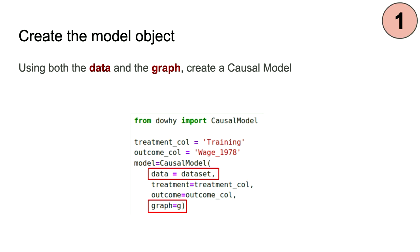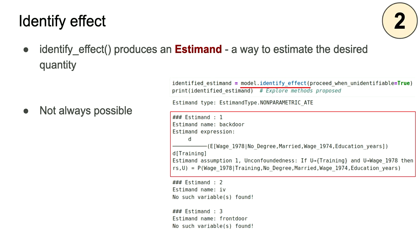That was the first step and really the bulk of the work you have to do as a user of the DoWhy library. Once you've created that graph as a string and you've got your data as a pandas DataFrame, you essentially pass them both into an object that DoWhy calls a causal model. You specify that the treatment is the training variable and the outcome is the wages in 1978, and you pass in the data and your graph. That's it for the first step. The second step is then to call identify effect — all of the remaining steps are literally just one function call, which makes it very easy.